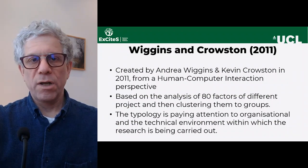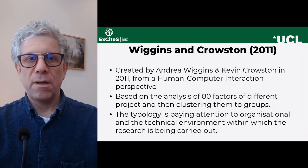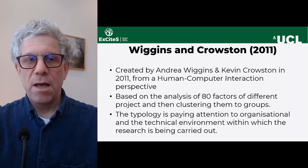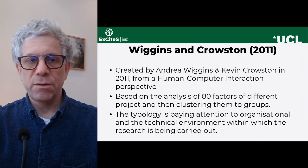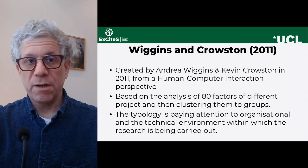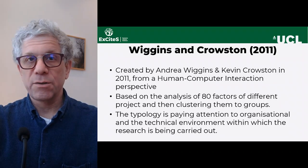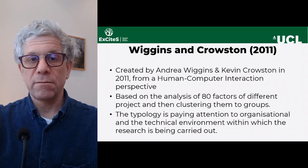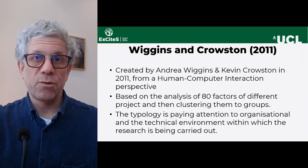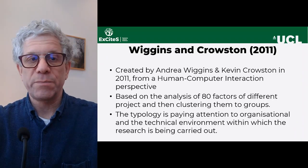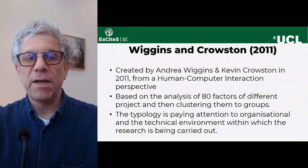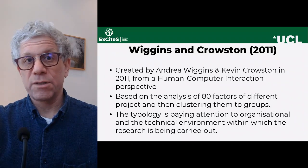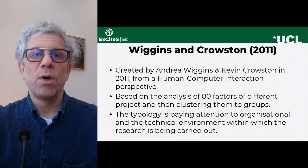Let's look at the Wiggins and Crosstown typology. It was created in 2011 by Andrea Wiggins and Kevin Crosstown from a human-computer interaction perspective. It was based on analysis of 80 factors of different projects, then creating clusters to identify a specific set of groups. The typology pays attention to the organizational and technical environment within which research is being carried out, as a way to help designers.